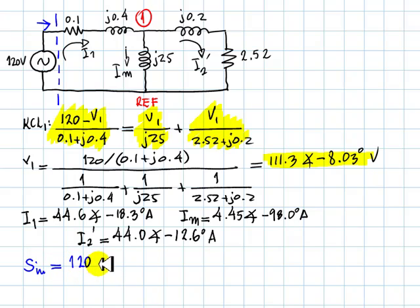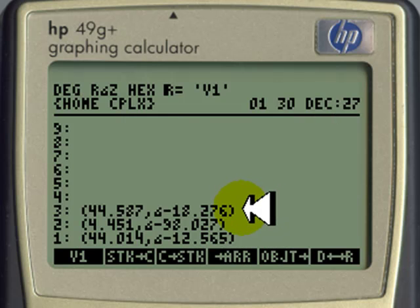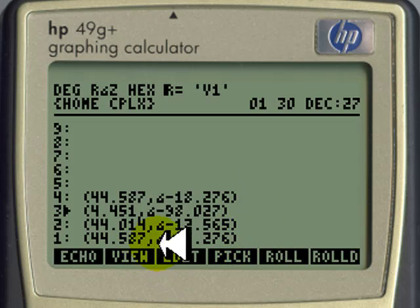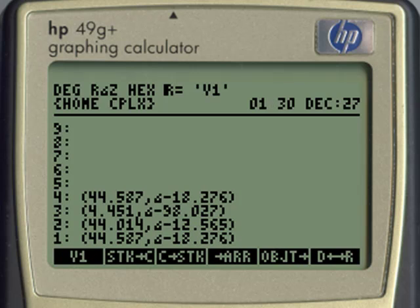Complex power at the input port is 120 multiplied by the complex conjugate of I1. I want to use that value but I don't want to delete it. With the up arrow I go there and then I pick that value. So I have my cake and I eat it too. That is a copy of I1 ready for me to use.